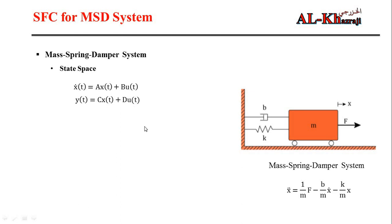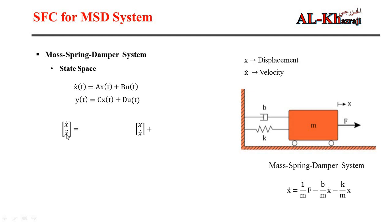We have two states: the first is displacement x, and the second is velocity x-dot. The input to the system is the force. The derivative of position is x-dot and the derivative of velocity is x-double-dot. For the first row of the A matrix, there is no equation relating x-dot to x, so we have zero in that position.